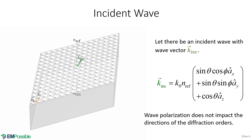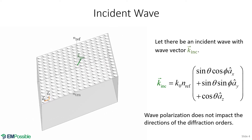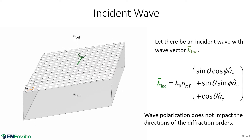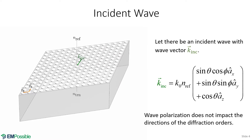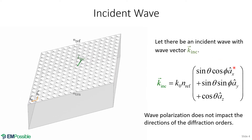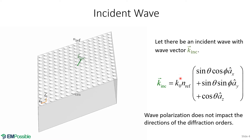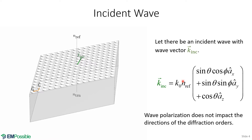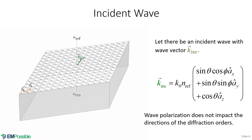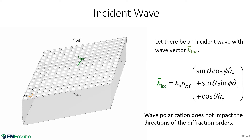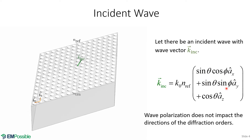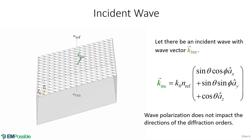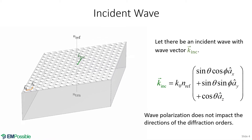Let there be an incident wave on this grating. If we define this incident wave with the spherical angles theta and phi, we can calculate our incident wave vector this way. Out front, we have our magnitude, which is our free space wave number k0, times the refractive index in the reflection region — that's where the source wave is coming from. And then we have our x component, our y component, and our z component. These equations come from converting spherical coordinates to Cartesian coordinates.